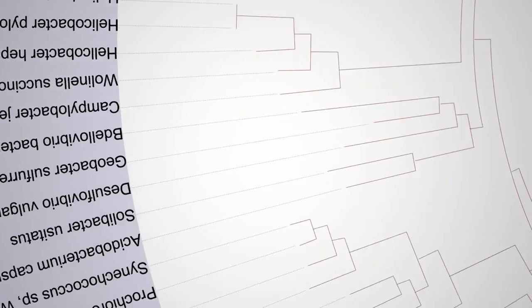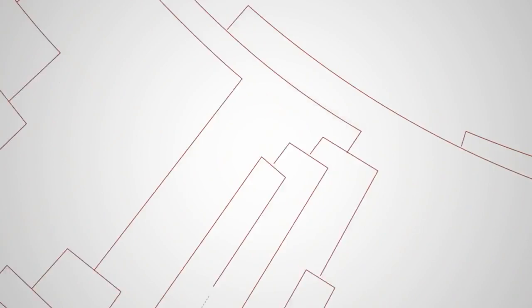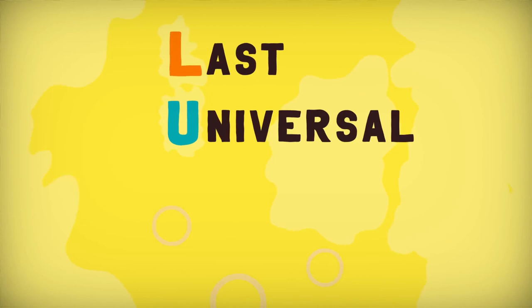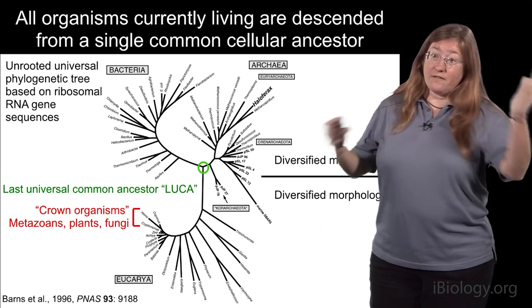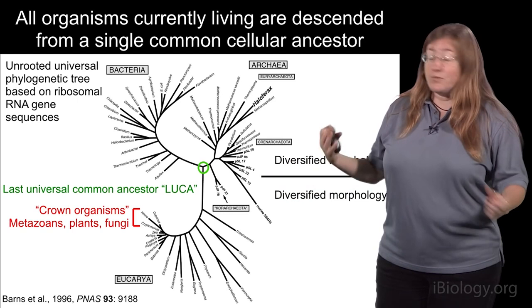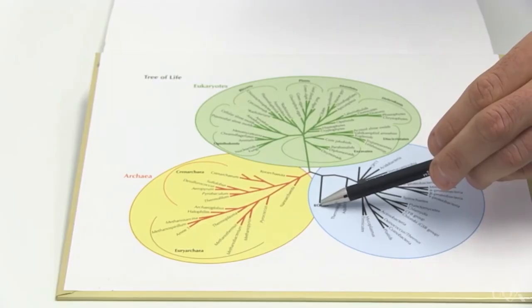That initial point before anything branches is a single species — the first species. The last universal common ancestor of life, or LUCA for short. LUCA wasn't the first life form, but it's as far back as we can trace. This was just the last cell that gave rise to everything that's living today, and it was already very complex. It already had ribosomes, it already had DNA, it already had most of the components of central metabolism, including all of the enzymes involved in glycolysis.